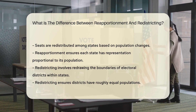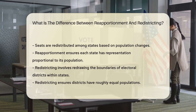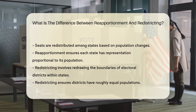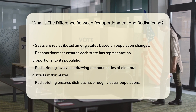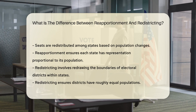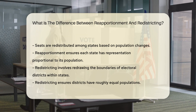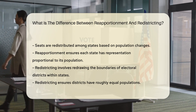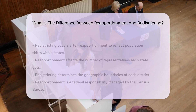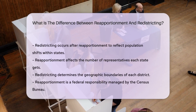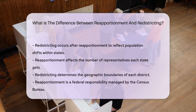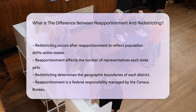Redistricting, on the other hand, involves redrawing the boundaries of electoral districts within states. This process ensures districts have roughly equal populations. Redistricting occurs after reapportionment to reflect population shifts within states, and both processes aim to ensure fair and equal representation.